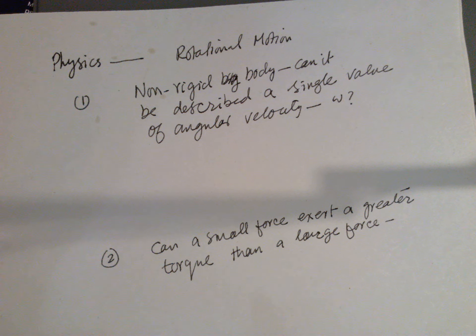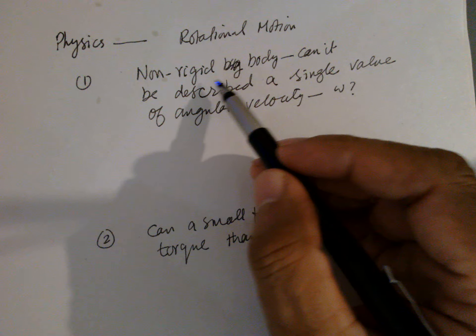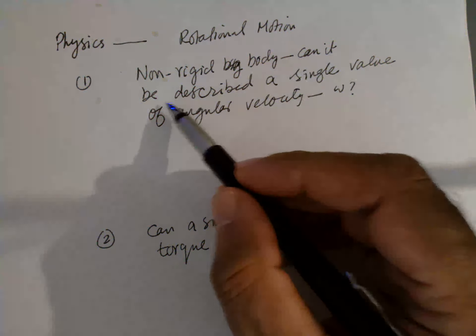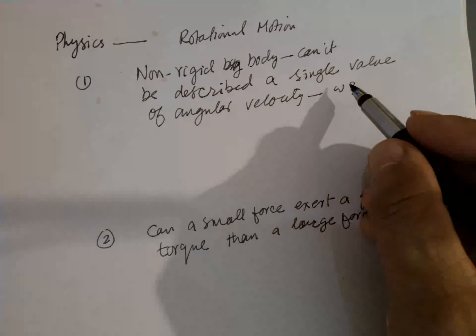Physics, rotational motion. The question is: can a non-rigid body be described by a single value of angular velocity, omega?